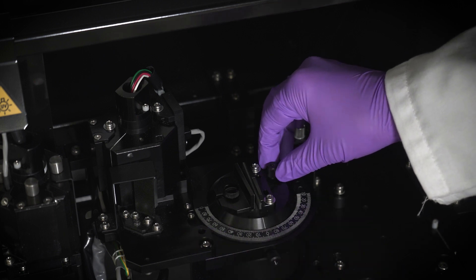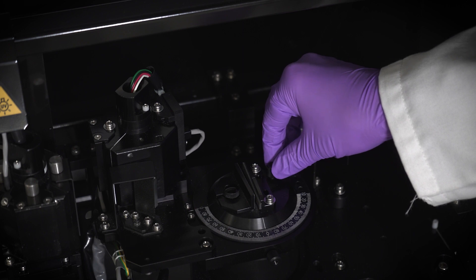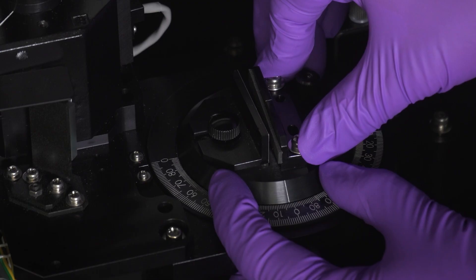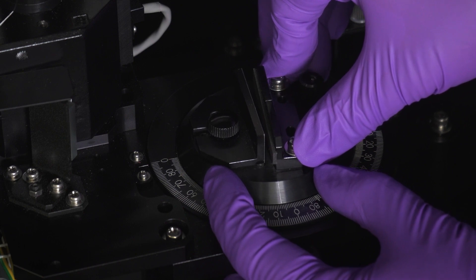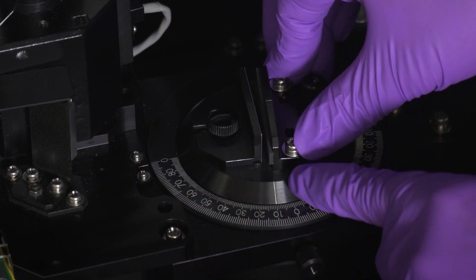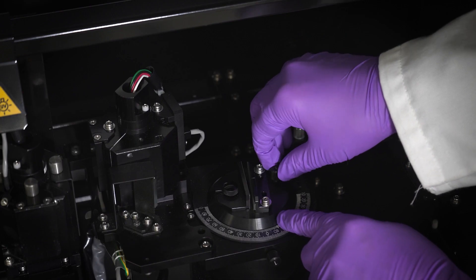Loosen the sample base plate set screw. Rotate the sample base plate to the desired angle of incidence. For example, if the sample angle of incidence is 10 degrees, tighten the base plate set screw.